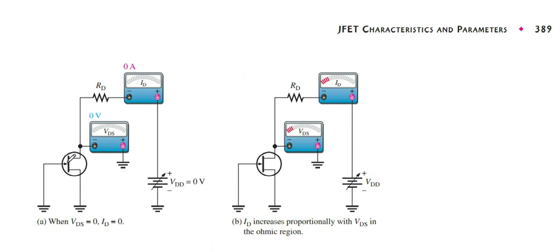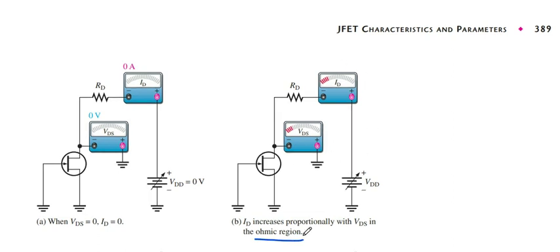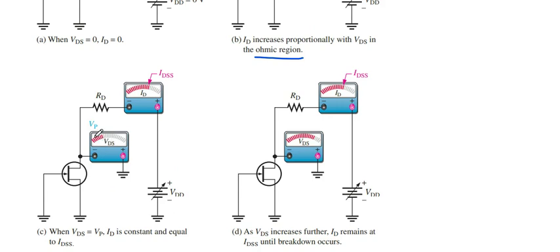After C, VGS controls ID. Again, VGS is 0 and VDS is 0, so ID is 0. As we increase the VDS, ID is also increasing. When it reaches this region, it represents the ohmic region. When ID reaches VP pinch-off voltage, ID is going to be constant.